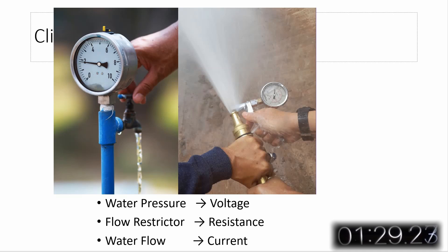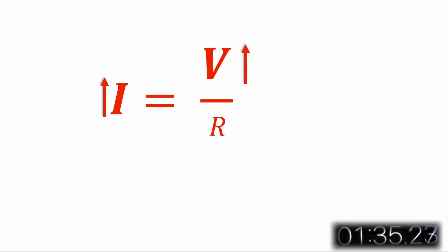more water pressure results in more water flow. And for a given water pressure, less restriction results in more water flow. Similarly, for a given resistance, more voltage results in more current. And for a given voltage, less resistance results in more current.